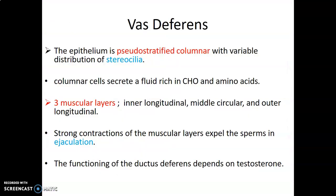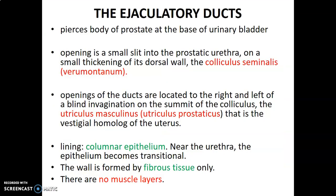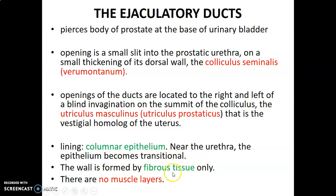So we go to the ejaculatory duct. This duct pierces the body of the prostate at the base of the urinary bladder and opens in a small slit into the prostatic urethra, specifically on the colliculus seminalis, or verumontanum, on the small thickening of its dorsal wall. The openings of the ejaculatory ducts are to the right and left of the blind invagination on the summit of the colliculus, called the utriculus masculinus or utriculus prostaticus, which is a vestigial homologue of the uterus. The lining of the ejaculatory duct is columnar epithelium, becoming transitional near the urethra. The wall is mainly fibrous tissue with no smooth muscle cell layers.